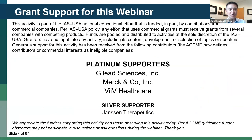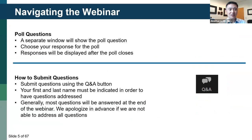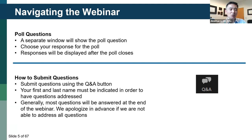Here are the contributors for the IAS USA webinar. There will be a few points during the presentation when I'll be asking questions — both at the beginning, the end, and at a couple points in the middle. A separate window will pop up showing the poll question. Once you choose your response, the percentages will be displayed after the poll closes. For some of the pre-test questions, we will go over the answers at the end of the webinar. If you have questions, please submit them in the Q&A button and please add your name.